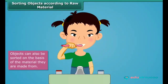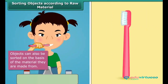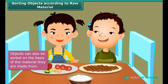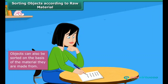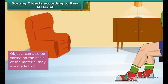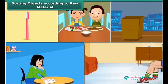The first object you use as soon as you wake up is your toothbrush — it is made of plastic. The plate you have breakfast in is made of melamine or stainless steel. The cupboard you keep your books or clothes in is made of iron or wood. The books you read are made of paper. The shoes you wear are made of leather, canvas, or rexin. All objects we use in our daily life can be classified on the basis of the raw materials used in making them.